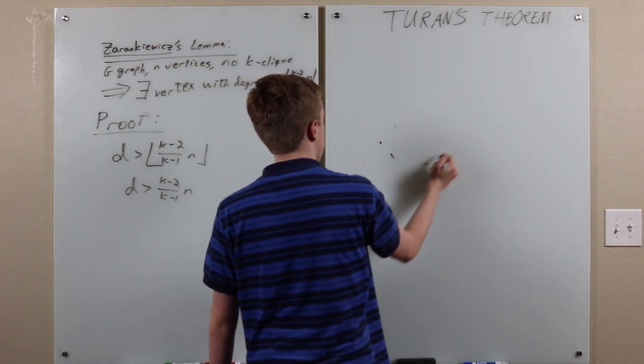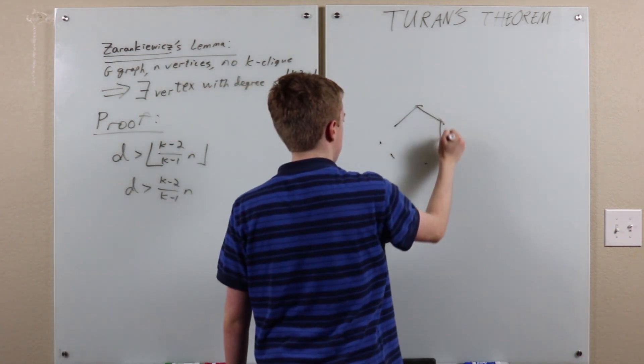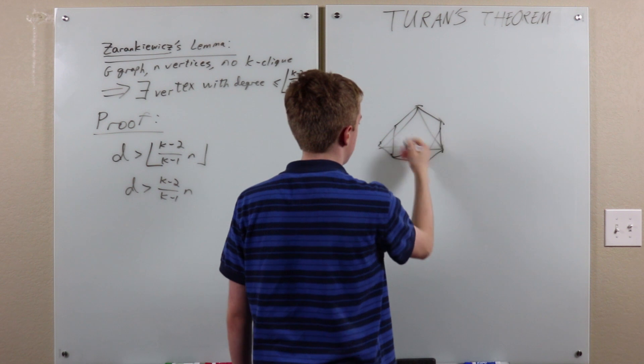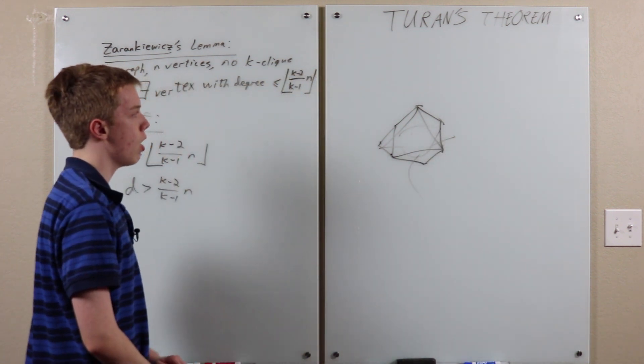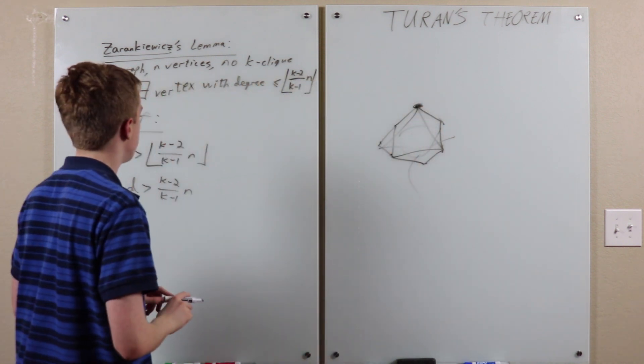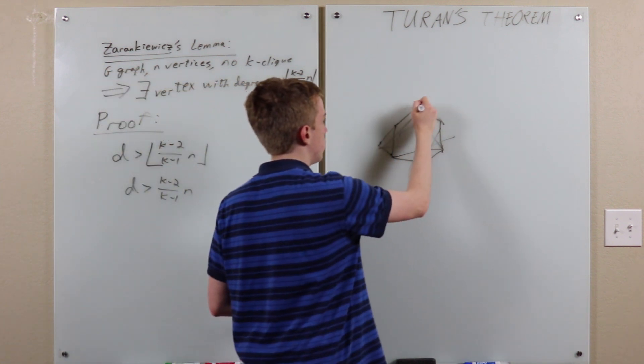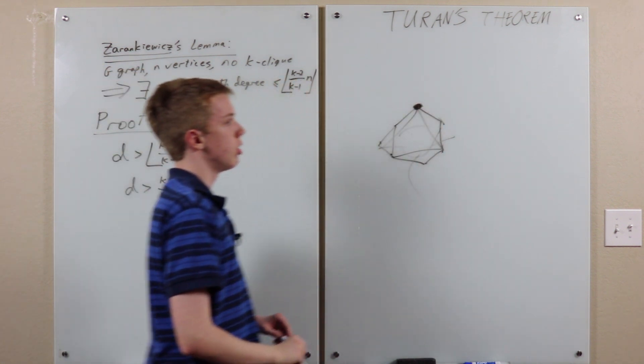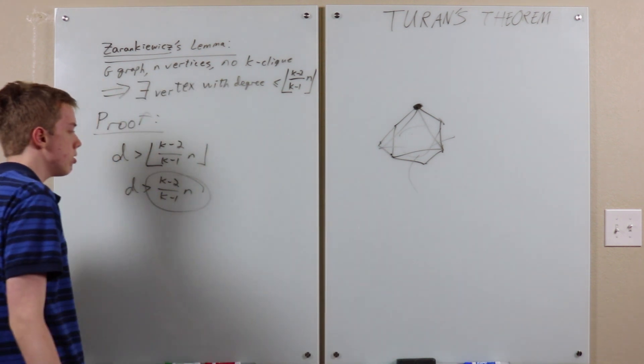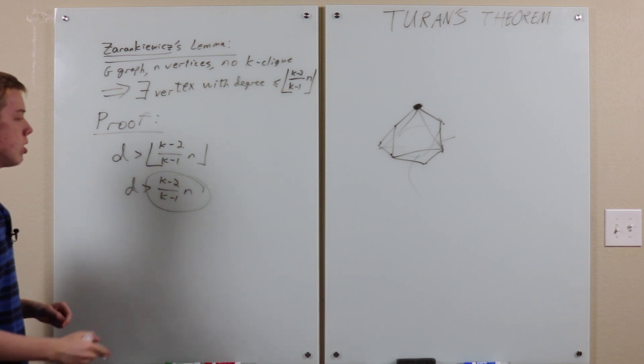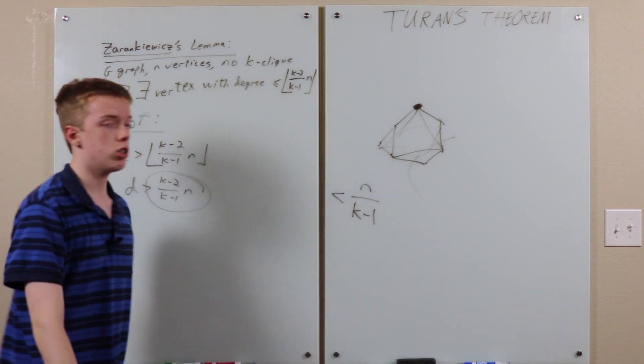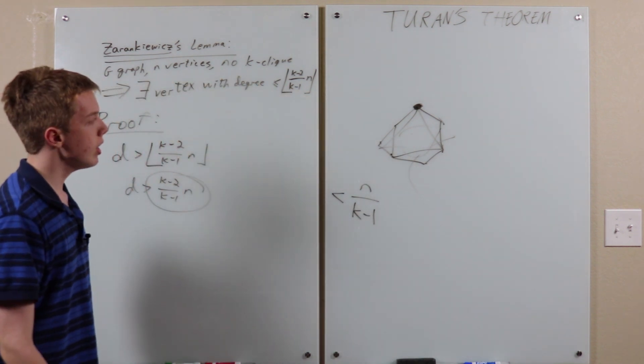basically if we have an L-clique, lots of things all connected by stuff, so on. And now, how many vertices in the graph are not neighbors of this one? So, since there are n vertices in the graph, and there are strictly greater than this many vertices that are adjacent to it, there are less than this many vertices that are not adjacent to it. Okay?